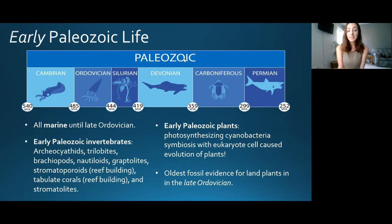We'll go through life in stages: early, mid, and late Paleozoic, covering invertebrates, plants, and vertebrates. We had mostly marine organisms throughout until the late Ordovician. Early Paleozoic marine invertebrates included archaeocyathids — very short-lived, excellent index fossils — and trilobites, which are great index fossils for the entire Paleozoic. We also had brachiopods, nautiloids, graptolites, stromatoporoids, tabulate corals, and stromatolites. These invertebrates were very important for marine ecosystems as reef builders.